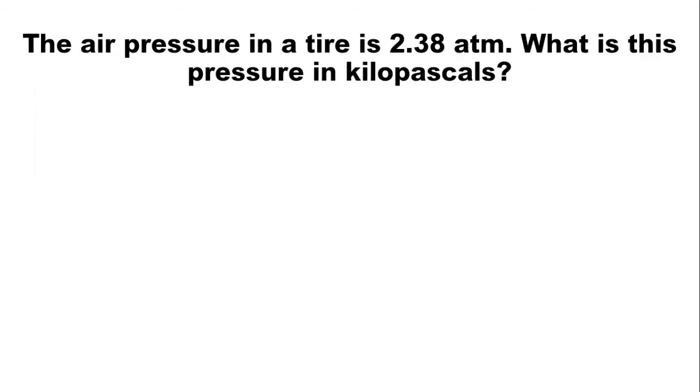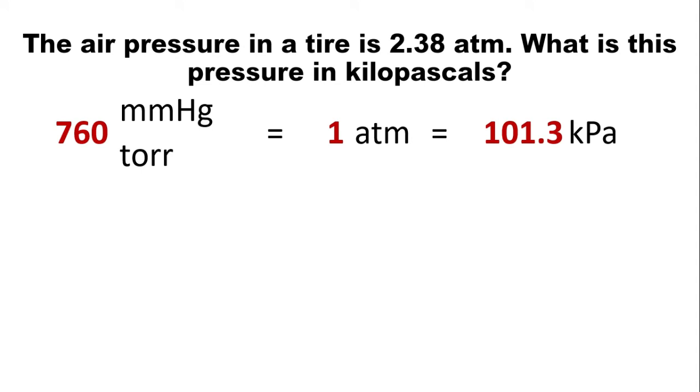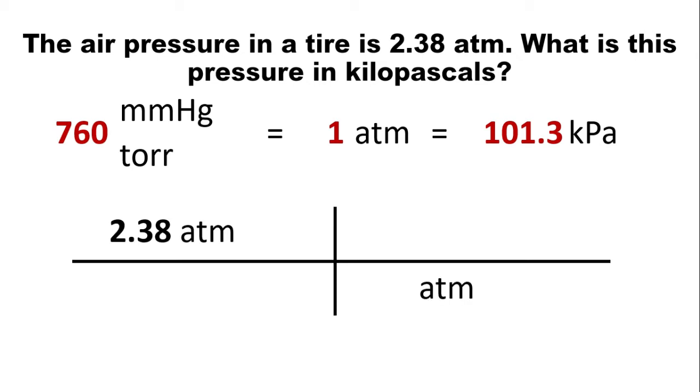Now, the air pressure in a tire is 2.38 atmospheres. What is this pressure in Kilopascals? Okay, again, we have this equation. Then, draw the t-table, write the given to the upper left. And since we want to cancel Atmosphere, it should be in the bottom. And we're getting kPa, so it should be in the numerator.